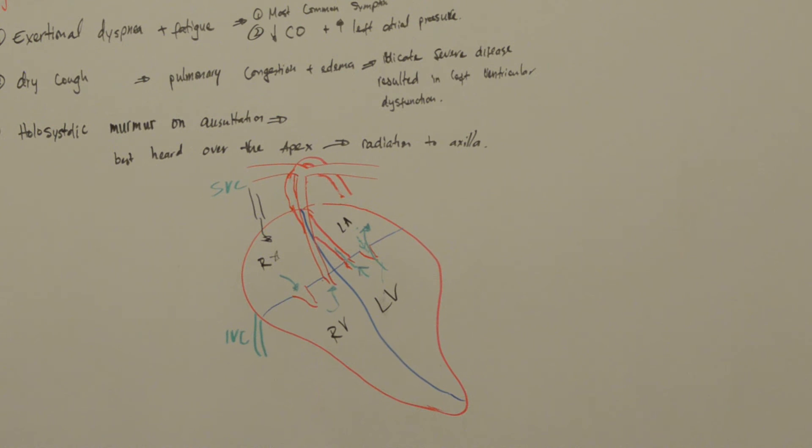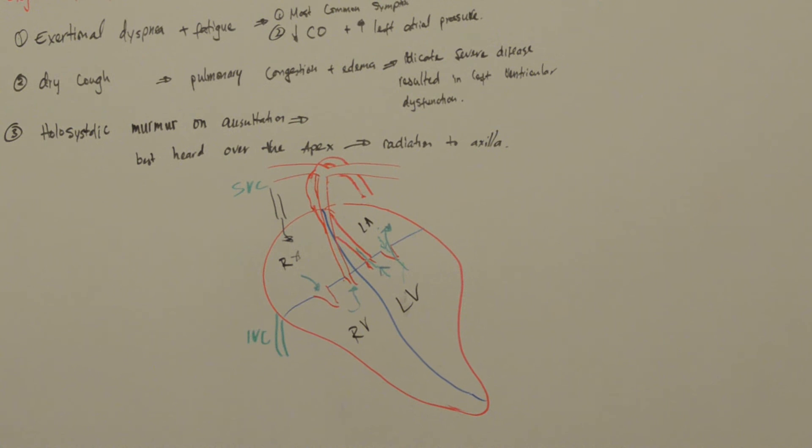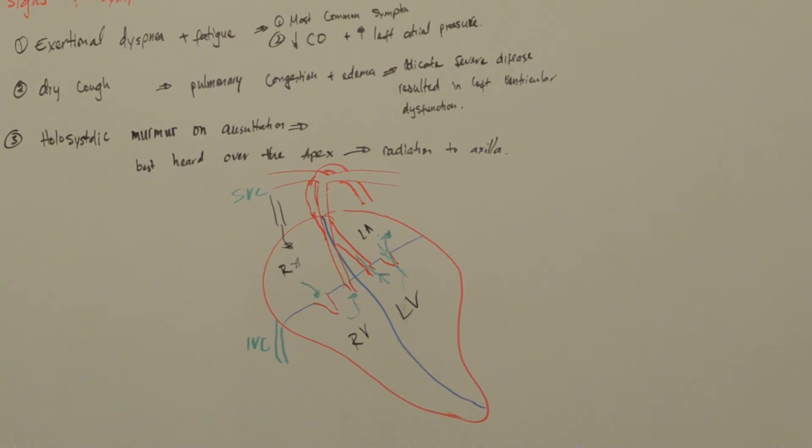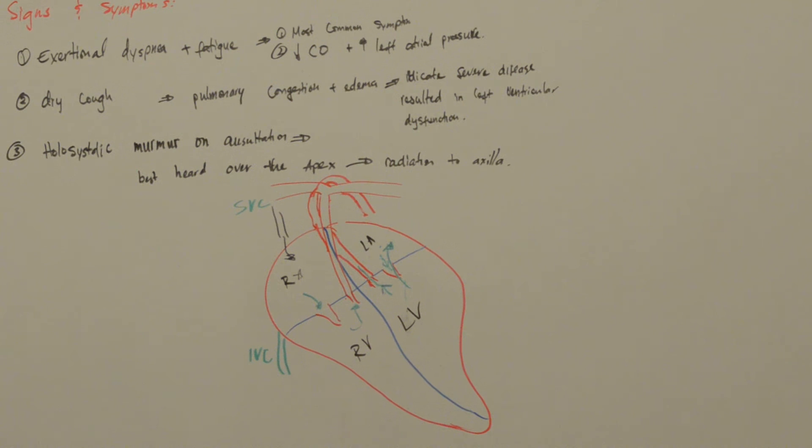The second symptom is dry cough. Why do we have dry cough? Because blood backflows into the left atrium and then back to the pulmonary veins, which flow back toward the lungs. This causes pulmonary congestion, where blood becomes congested and stays in the lungs. This increases hydrostatic pressure, which causes edema. Both of these are signs of severe disease resulting from left ventricular dysfunction.